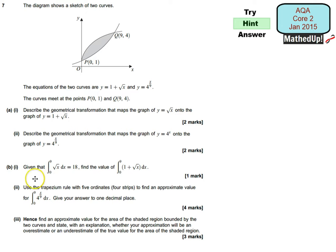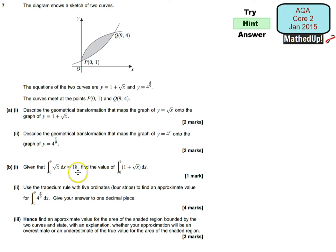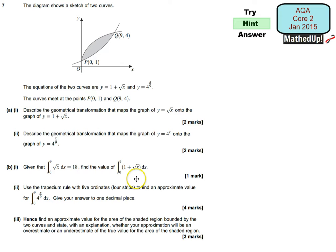Part B says: given that the integral of root x between the limits of 0 and 9 is equal to 18, find the value of the integral of 1 plus root x between the limits of 0 and 9. Using this information and the transformation that took place, we should be able to quickly work out how much this has increased and therefore find the value of this integral.